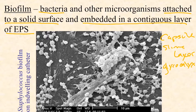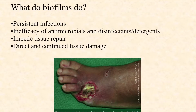Some biofilms are going to be a pure monoculture like this; others are going to be complex cultures with a lot of different microorganisms. So what do they do, and why are we worried about them when it comes to infections? Well, they cause persistent infections. If you have a biofilm in your sinus cavity, you're likely to have persistent sinus infections. The physical nature of this three-dimensional semi-solid structure with all that EPS material makes it very hard for antibiotics to diffuse in and contact the bacteria, or for disinfectants, detergents, and antiseptics to diffuse in.